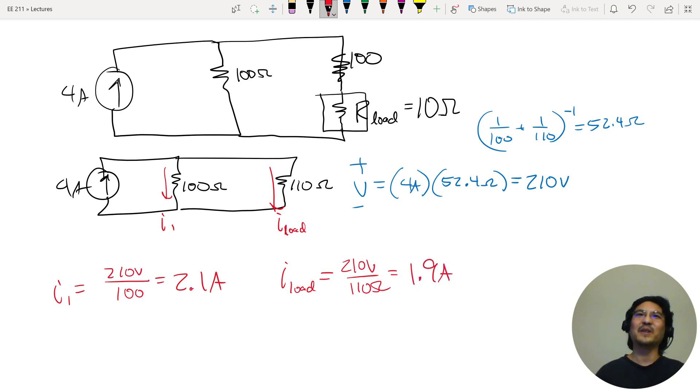So it's no longer 200 volts with 2 amps here and 2 amps here. Not at all. It's 210 volts, and I'm getting 2.1 amps here, 1.9 amps here. Not exactly what I was expecting.